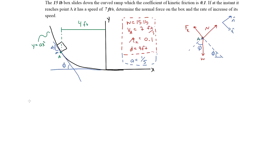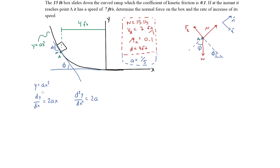We define y = ax² and find the derivative: dy/dx = 2ax. We'll also need the second derivative, which is simply 2a. To find the slope at point A we plug in the x-value for that point.